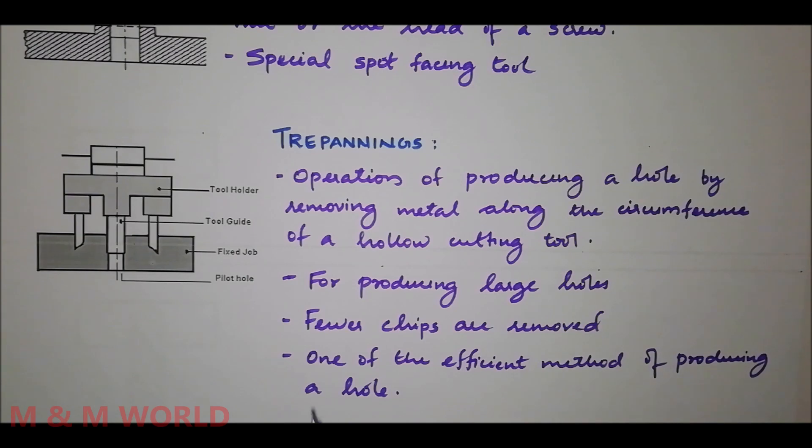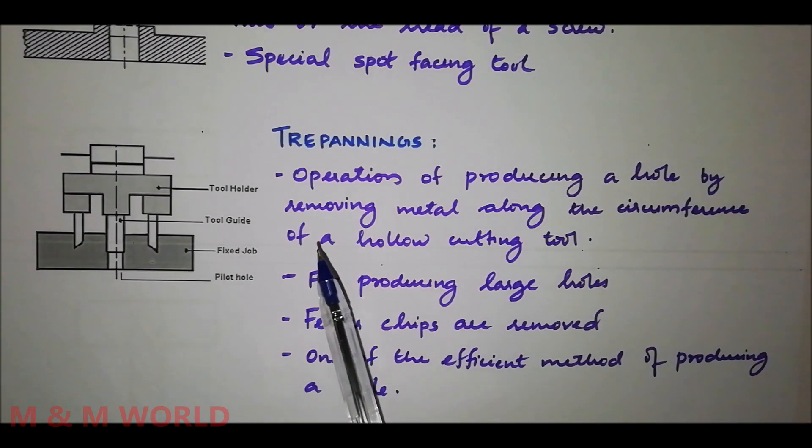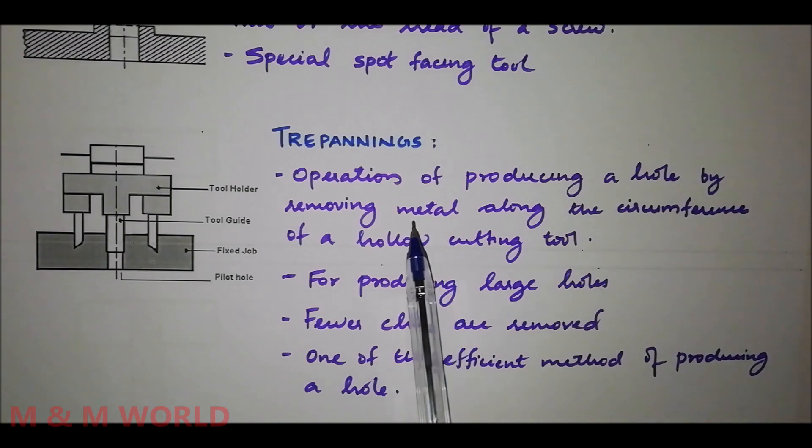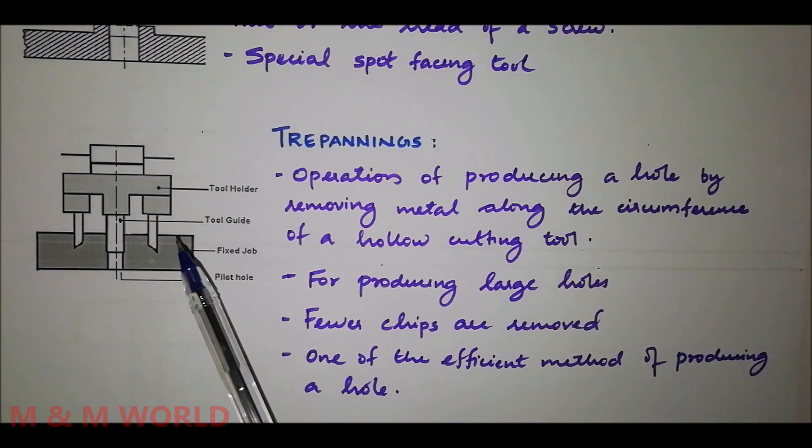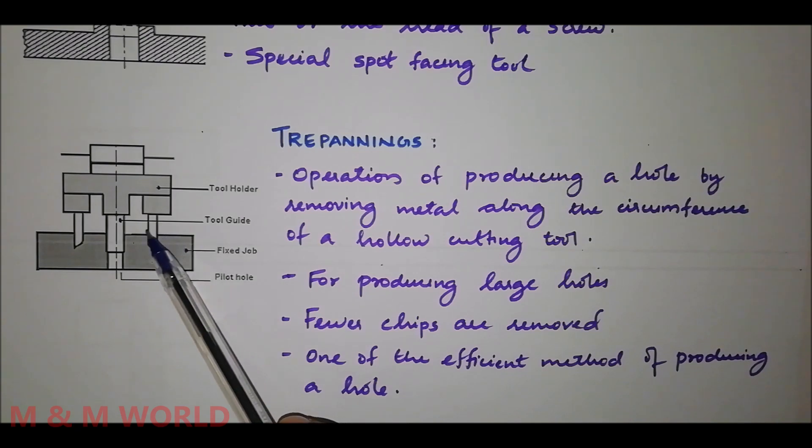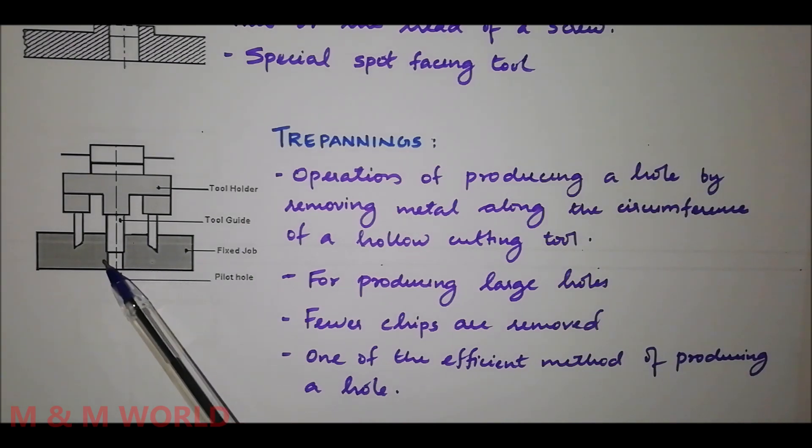The last one is trepanning. It is the operation of producing a hole by removing metal along the circumference of a hollow cutting tool. A cutter consists of one or more cutting edges placed along the circumference of a circle and is used to produce an annular groove. It is feasible if the hole has a diameter of more than 50 mm.